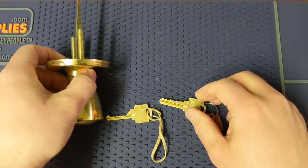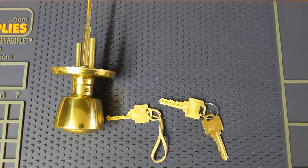That's how you take apart a Weiser knob without a key. Thanks for watching. We'll see you next time.